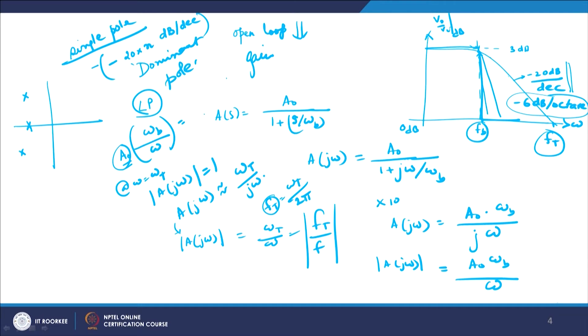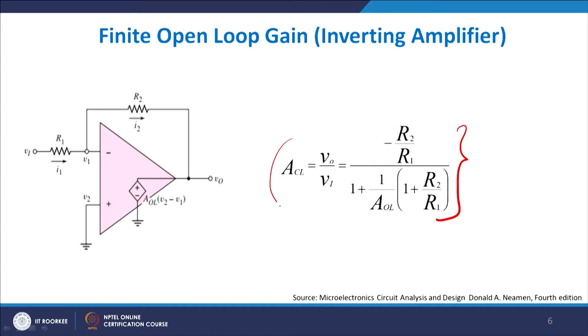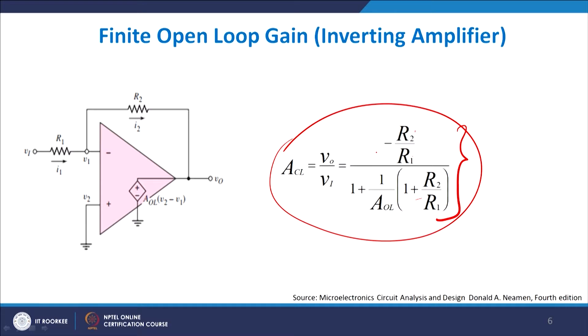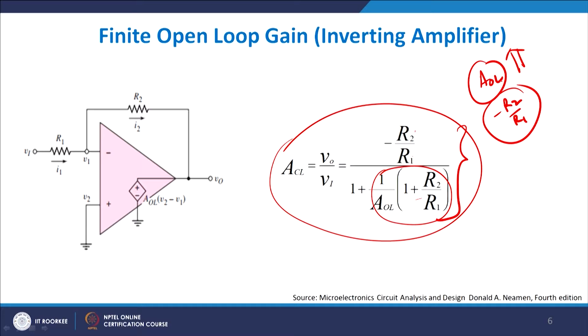For the closed-loop inverting amplifier with finite open loop gain, ACL equals (R2/R1) divided by (1 + (1/AOL)(1 + R2/R1)). If AOL is extremely high or infinitely large, the correction term goes to zero and you recover ACL equals R2/R1. But if AOL is low — say 10, 20, or 40 — it lowers the overall closed loop gain.